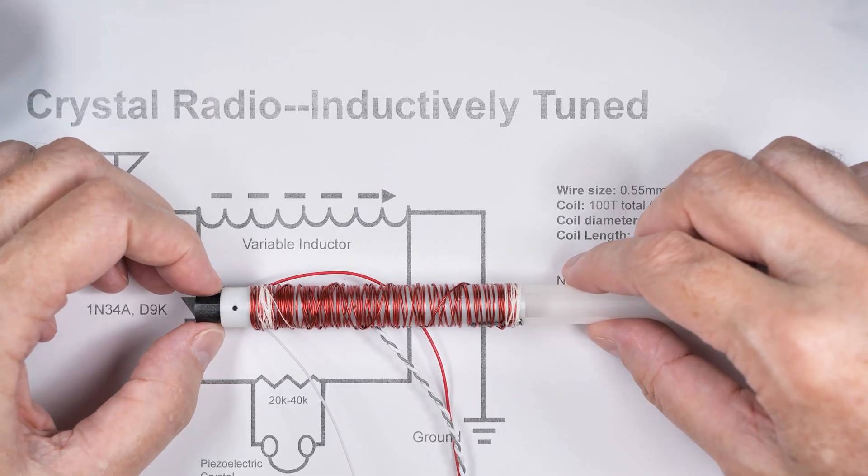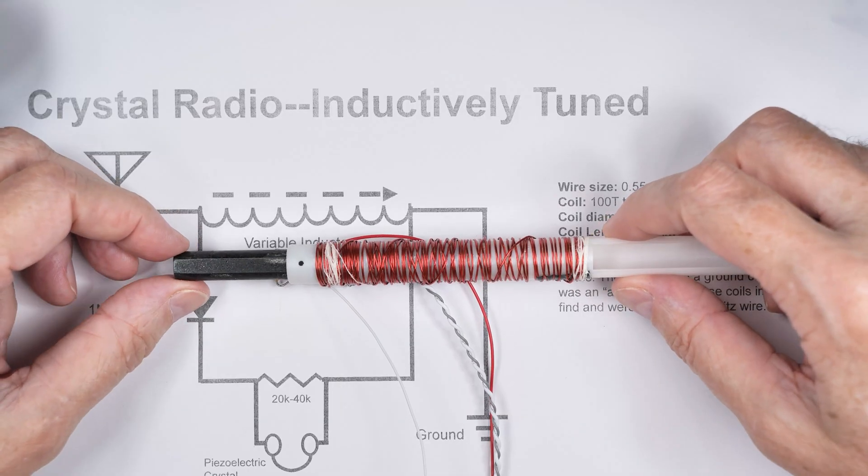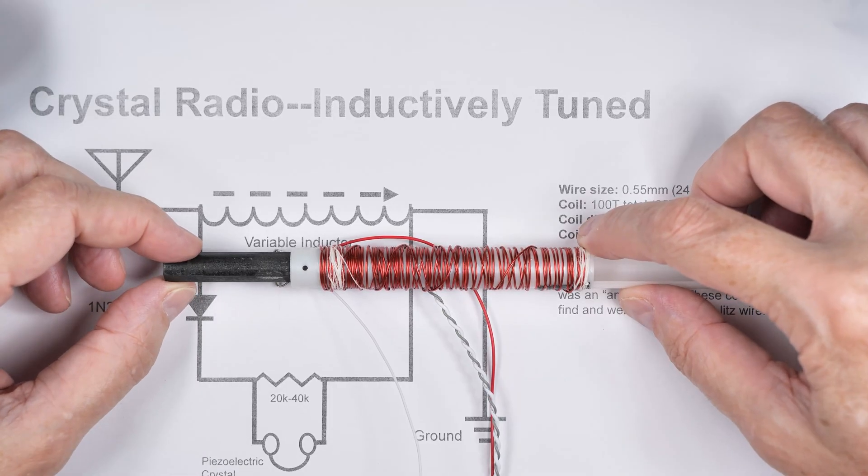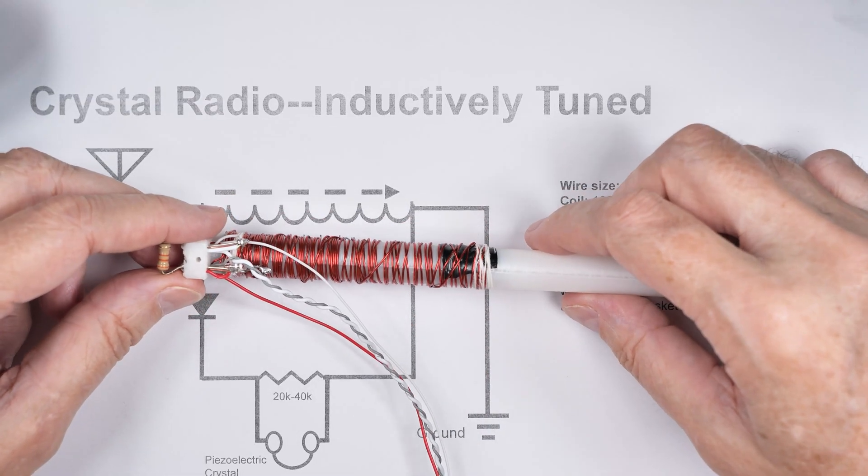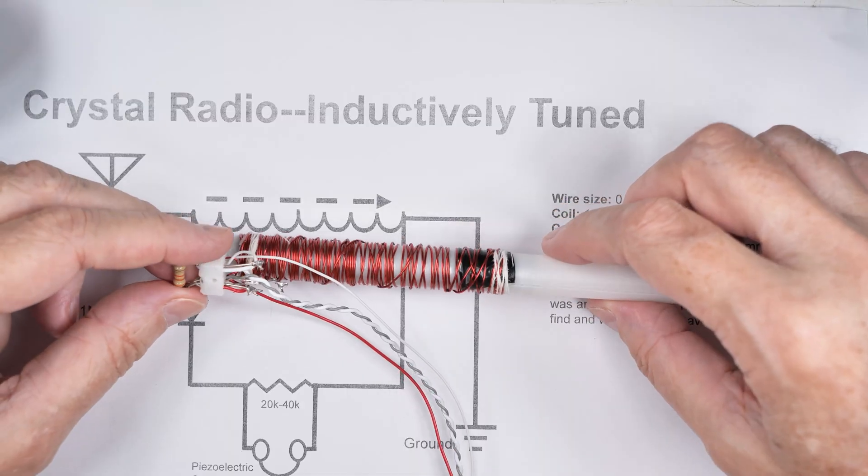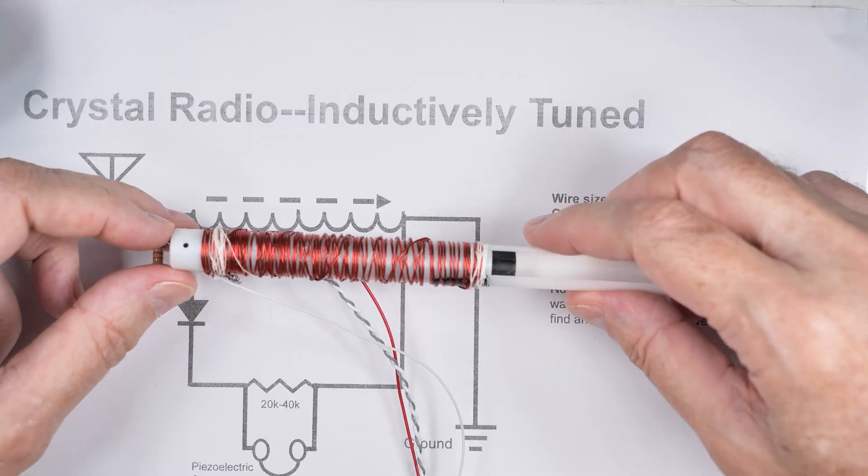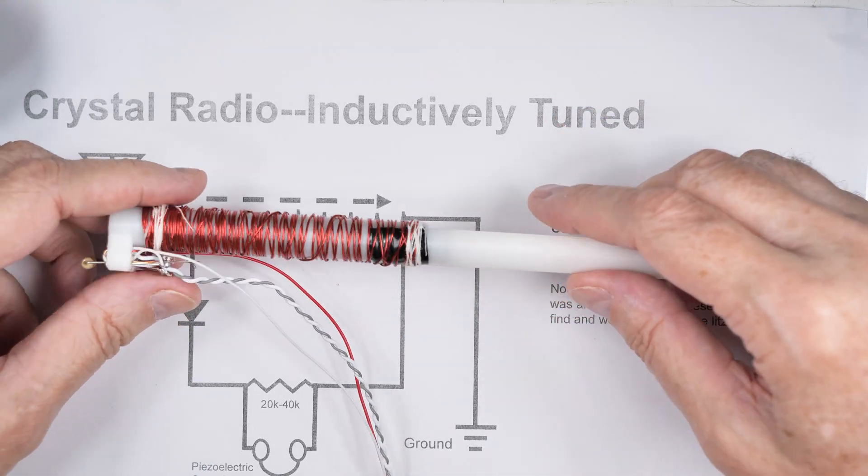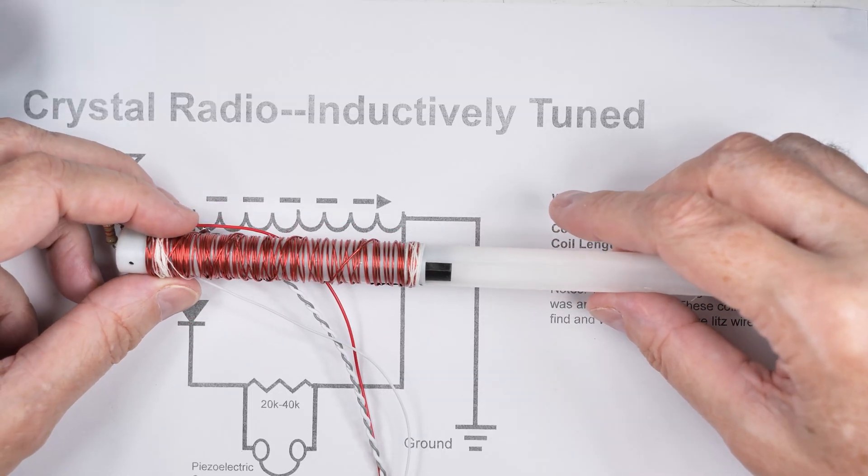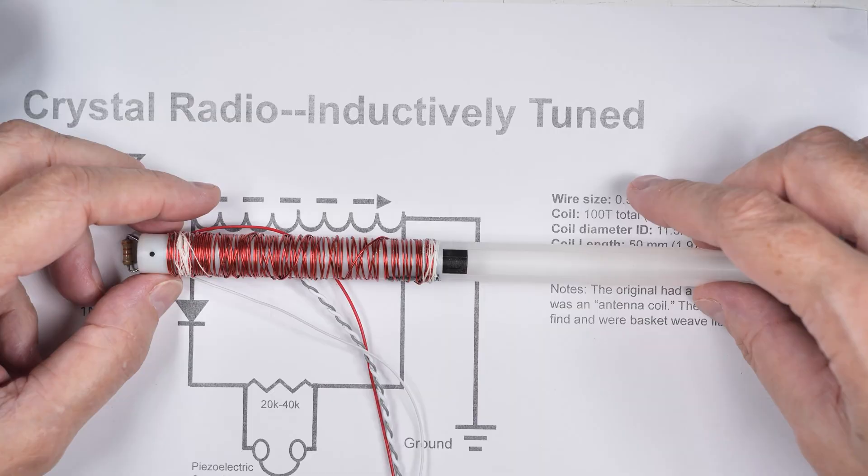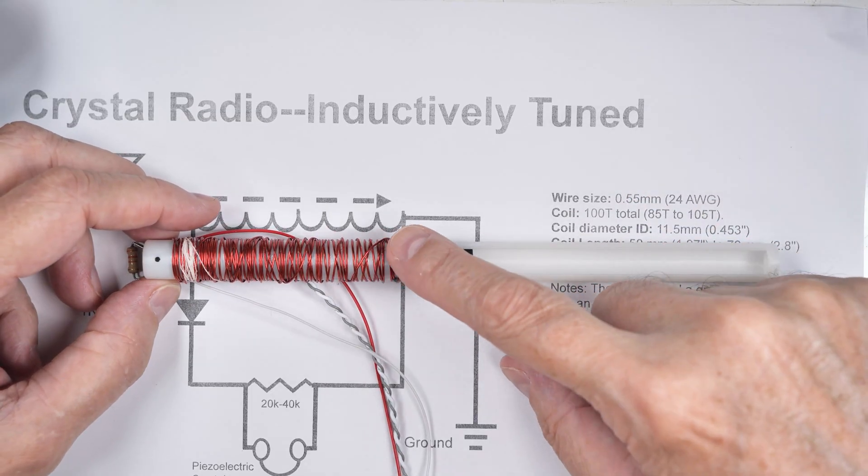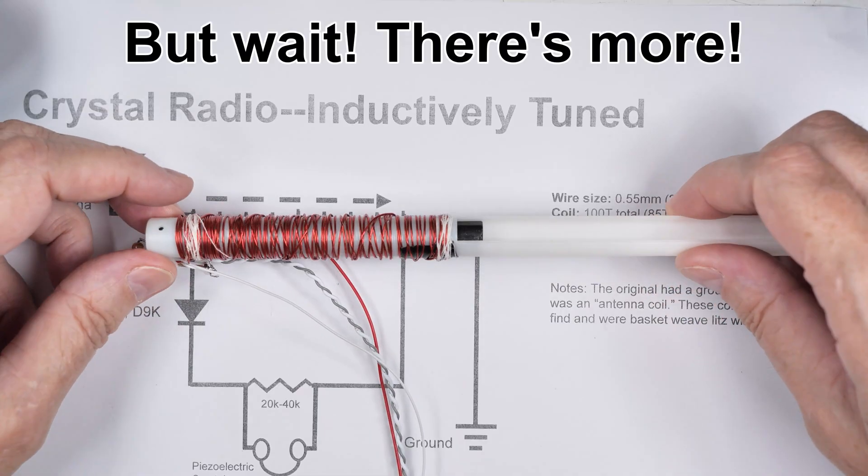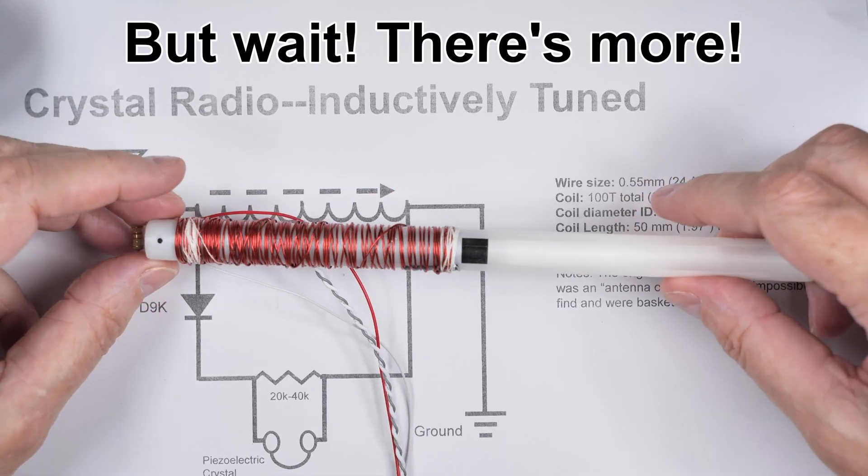So, what else do you need to know to make this? Ferrite rod, you can order them online. They're cheap, about like $1.50. And this is 100 millimeters long by 10 millimeters wide. Details in the description below. But otherwise, that's pretty much it. It is just something you can wind up and drop in a, wrap it in a plastic wrap and stick it aside for emergencies or camping or prepping, whatever you are doing. So, this is the first result out of doing this inductive tuned radio. And I hope you'll find that useful and interesting as you progress in your crystal radio experimentations.